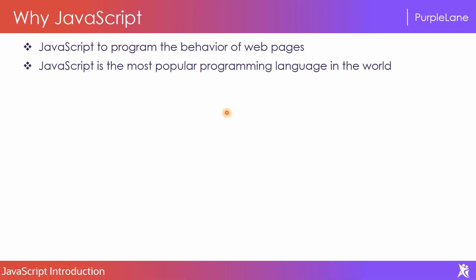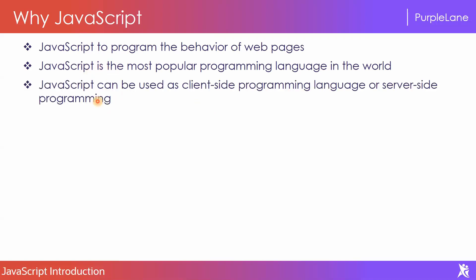You might have already understood the importance of JavaScript — it is used to program the behavior of web pages and it is one of the most popular programming languages in the world. There is one more reason to learn JavaScript: nowadays in the 2020s, JavaScript can be used as both client-side programming and server-side programming.